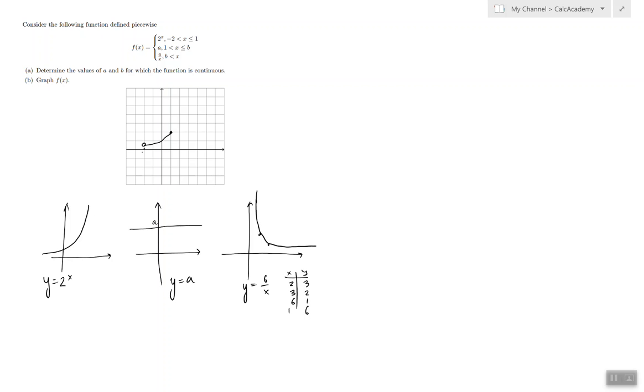At negative 2, it's not defined. So, we have to leave a circle here. And this is the first piece. So, it doesn't depend on any parameters. That's why I chose to graph it first.